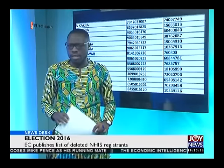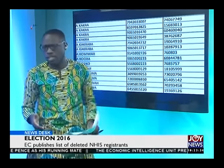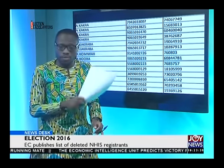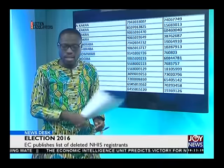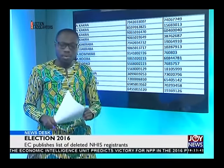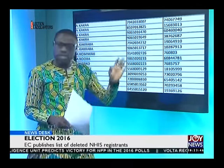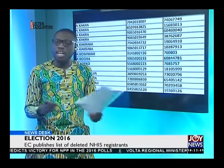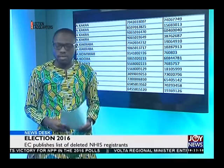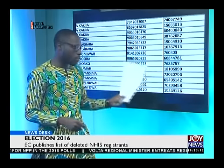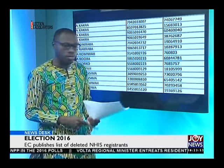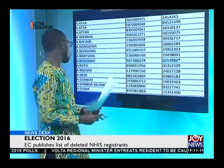The Let My Vote Count Alliance as well as the NPP have been raising issues with these very lists. Quite a number of them say the list is problematic and that the EC is just adding numbers to make up the 56,900. This is just one part of what we'll be bringing to you.